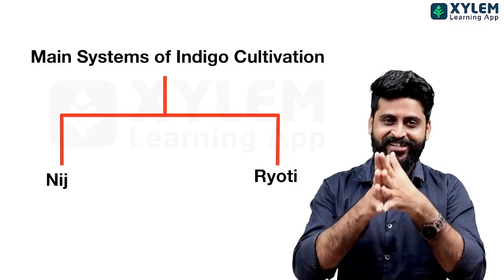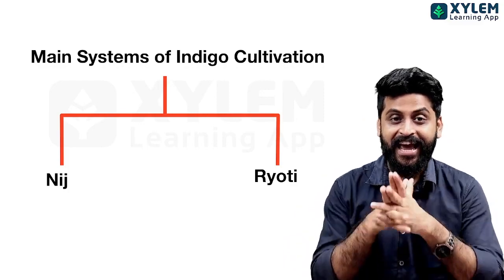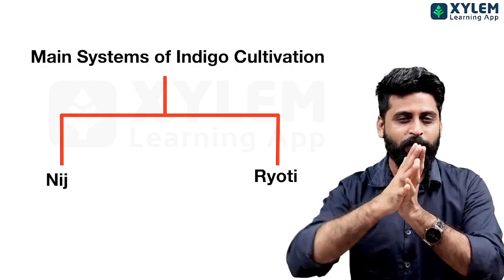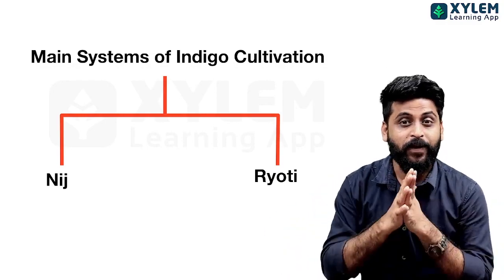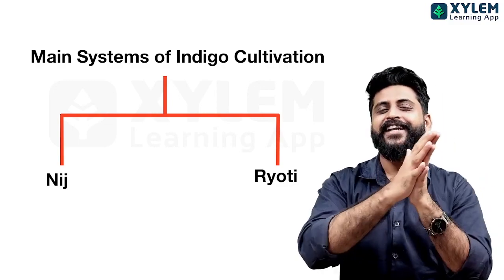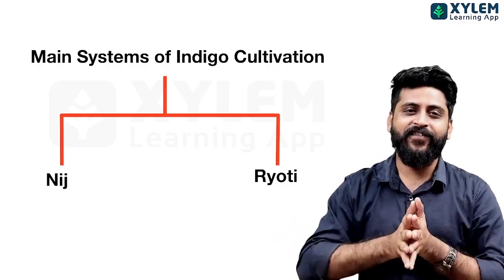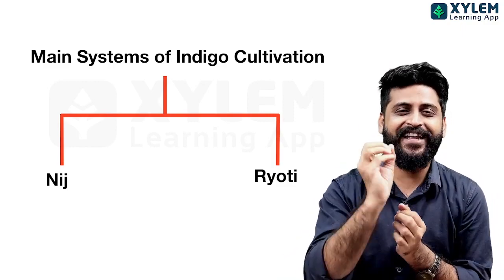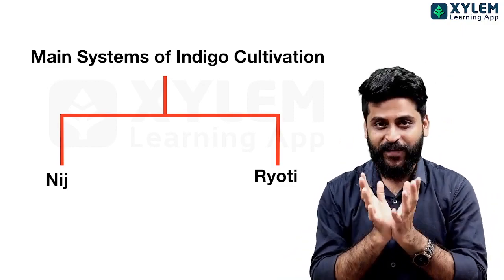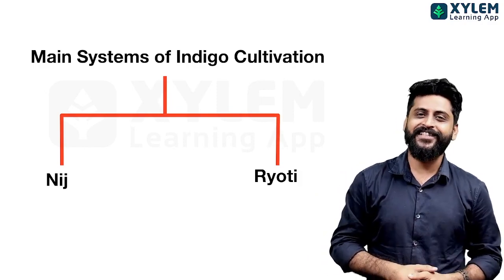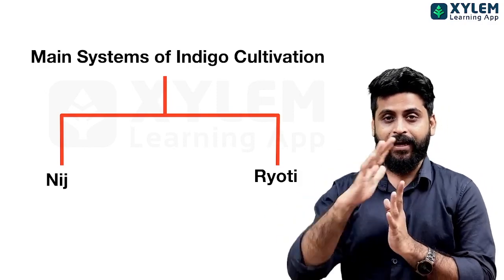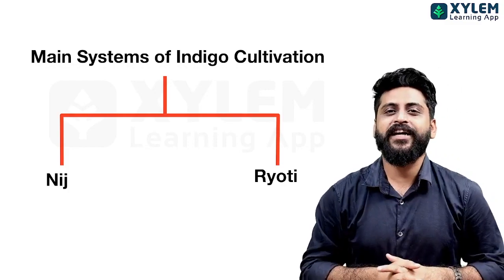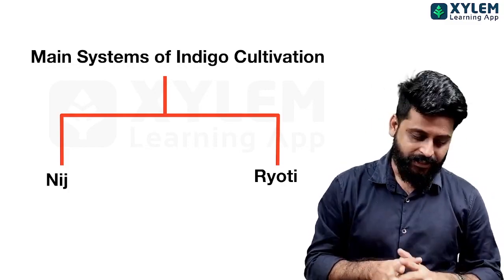The two systems are Niche and Raiti. In this class, we will complete Niche Cultivation and Raiti Cultivation. There are two types of Indigo Cultivation: Niche and Raiti.